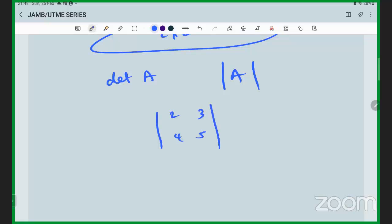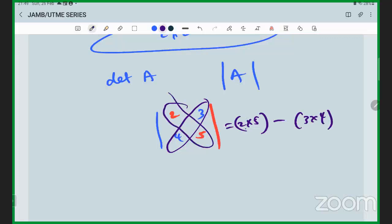Another thing - we should start with this. We multiply the elements on the first diagonal. Two times five minus elements on the second diagonal three times four. Element on first diagonal two times five minus element on second diagonal three times four - you might get 10 minus 12 which is equal to minus two.